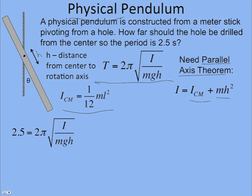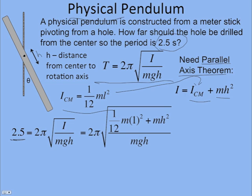So we can put that into here. We set the period equal to the given value, 2.5 seconds. Then we can substitute our rotational inertia in for I. You can see the mass is going to cancel. And l is 1 in this case, it's a meter stick. Put in whatever the length is. So I got 1/12 plus h squared. Then I can put in 9.8 for g.